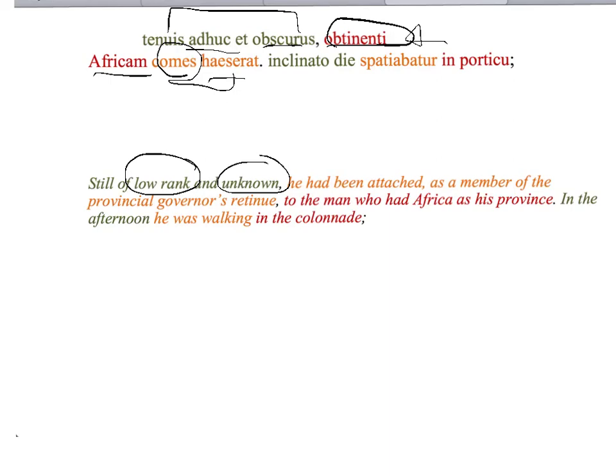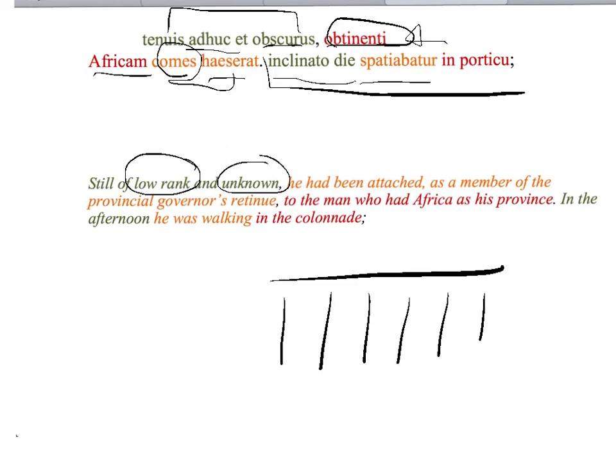Then we go into the story. Inclinato die, with the day kind of inclined, it's an ablative absolute, with the day setting, literally inclining over. So in the afternoon, he was spatiabatur, he was walking in portico, in a colonnade. In other words, a covered area with columns, like that. That's the portico. So it's in the afternoon, so it's not dark, but it's in the afternoon, a time of relaxation.